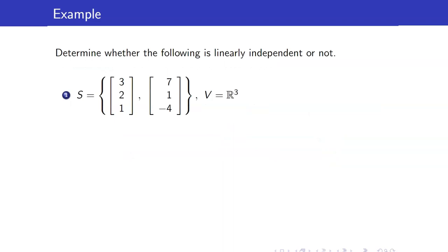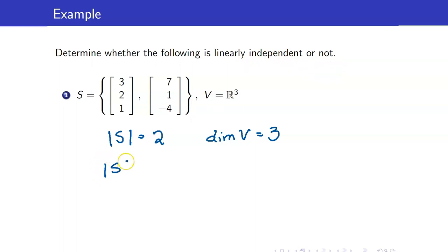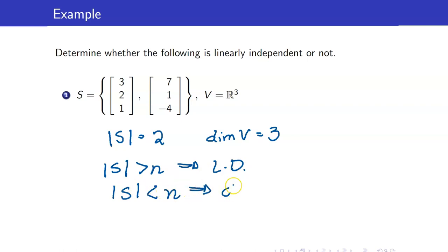Let us look at examples. Determine whether the following is linearly independent or not. Our set S has two elements and the dimension of V (which is R³) is equal to 3. Since S has fewer elements than n, we still have to check. But since our set S has only two vectors, it is easy — since they are not scalar multiples of each other, it is linearly independent.